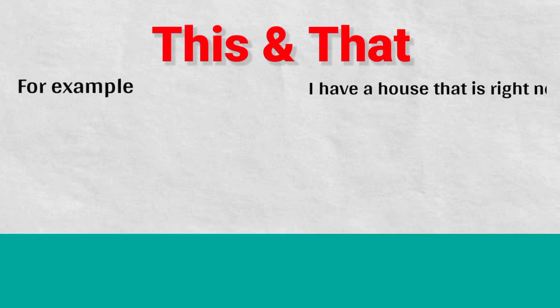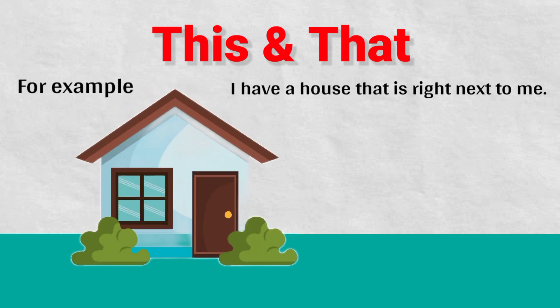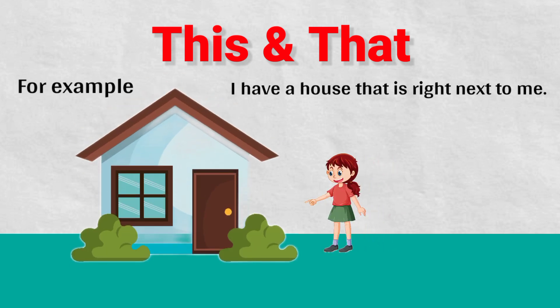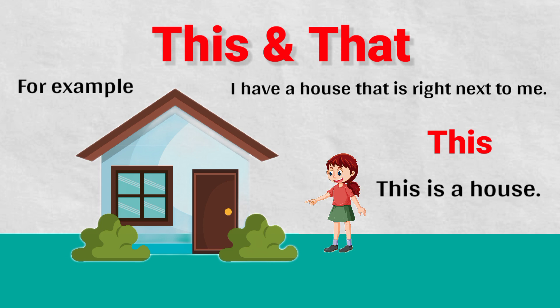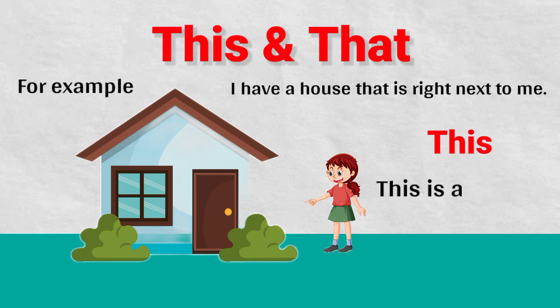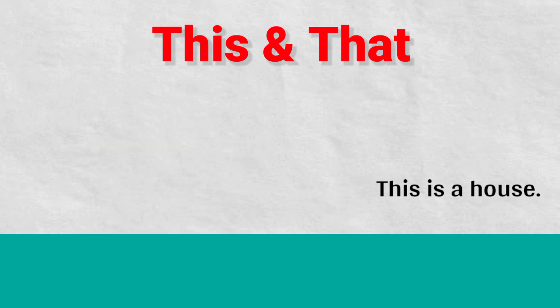For example, I have a house that is right next to me. Mere paas mein khadi hoon aur mere bilkul paas mein ek ghar hai. Kyunki yeh paas mein hai, toh hum use karenge 'this'. Toh humara sentence banega: 'This is a house.' Aapko yeh dhyan dena hai, kyunki hum ek chiz ke baare mein baat karte hai. Isi liye hum likhte hai 'This is a house' — yaani ke, yeh ek ghar hai.